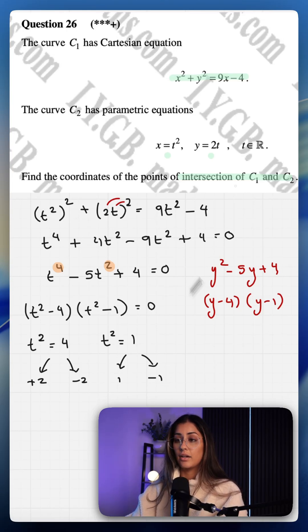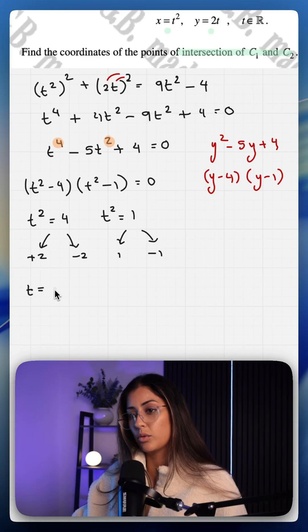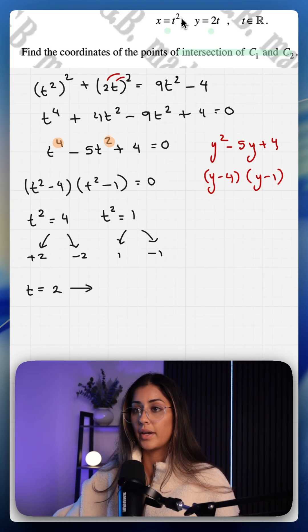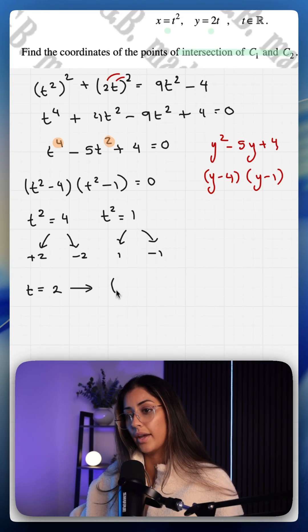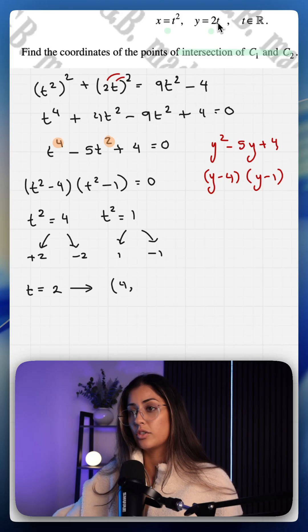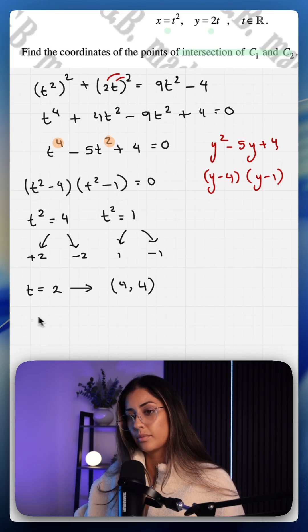So we're going to go ahead and plug in our t values into our parametric equations to get our x and y coordinates. So when t equals 2, 2 squared is 4, so x is 4 and 2 times 2 is 4. When t equals minus 2, minus 2 squared is also 4, minus 2 times 2 is minus 4.